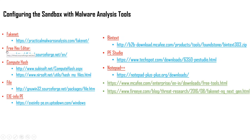I have also listed some URLs where you can download static analysis tools: Free Hex Editor, Compute Hash, ExeInfo PE, PE Studio, BinText, and Notepad++. These tools help identify files — how malware has been packed or compiled, whether it is an executable, PDF, or document file, and whether strings are embedded in the file. I will share this URL in the description of the upcoming YouTube video.